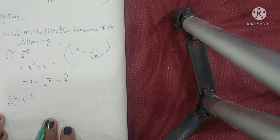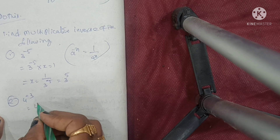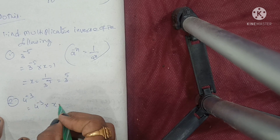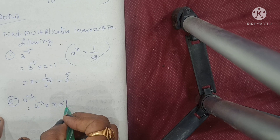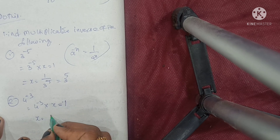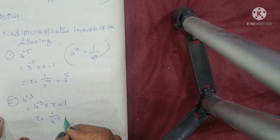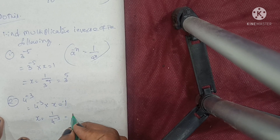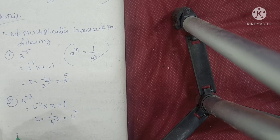Second one: 4 power of minus 3. Setting 4^(-3) × x = 1, so x = 1 by 4 power of minus 3, that is equal to 4 power of 3. Simple.